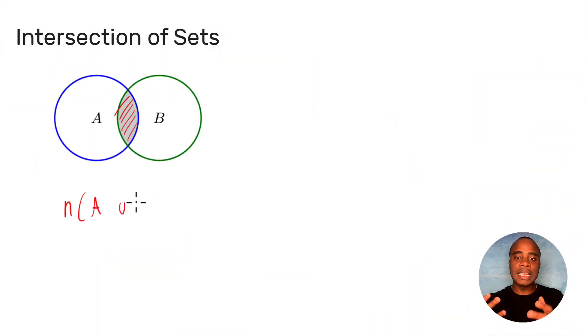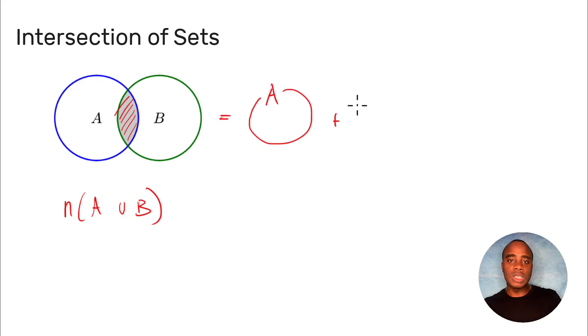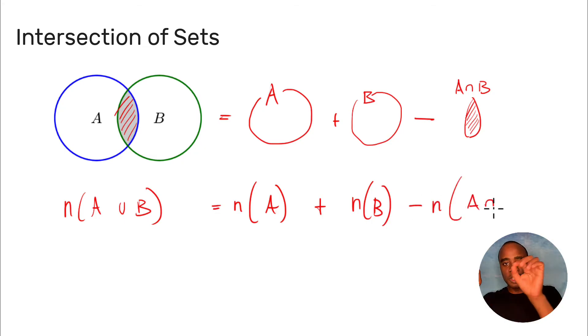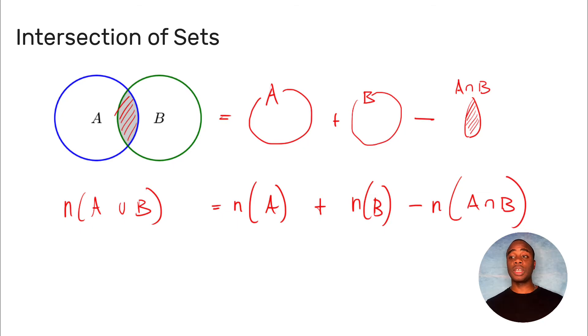The fifth one is intersection and union of sets. This is a formula students don't always remember. Basically, the number of things in the union of two sets equals the number of things in those two sets minus the intersection — you take out the ones that overlap. It's really important for solving equations with sets, especially where they have an intersection.